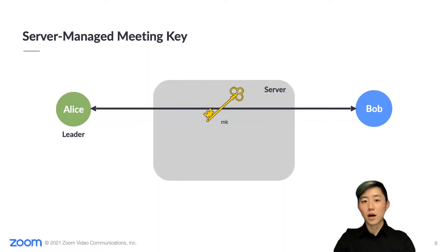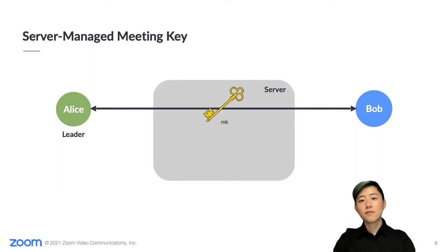Zoom servers actually do minimal processing of the video streams and therefore don't need access to the plain text meeting contents. However, the server must possess the meeting key in order to support some widely used Zoom features, including joining a meeting from a telephone, cloud recording, and live transcription. For this reason, the server generates the meeting key. This tradeoff offers important functionality while still protecting against eavesdroppers on the network.